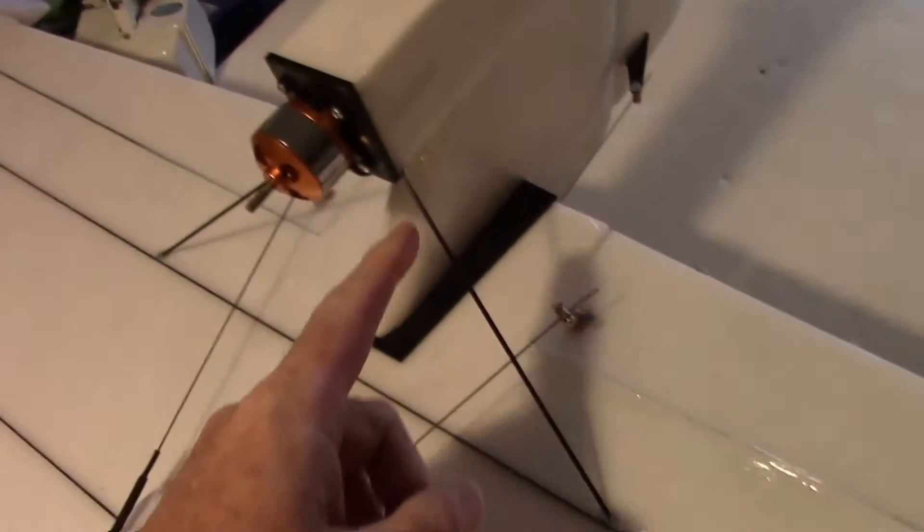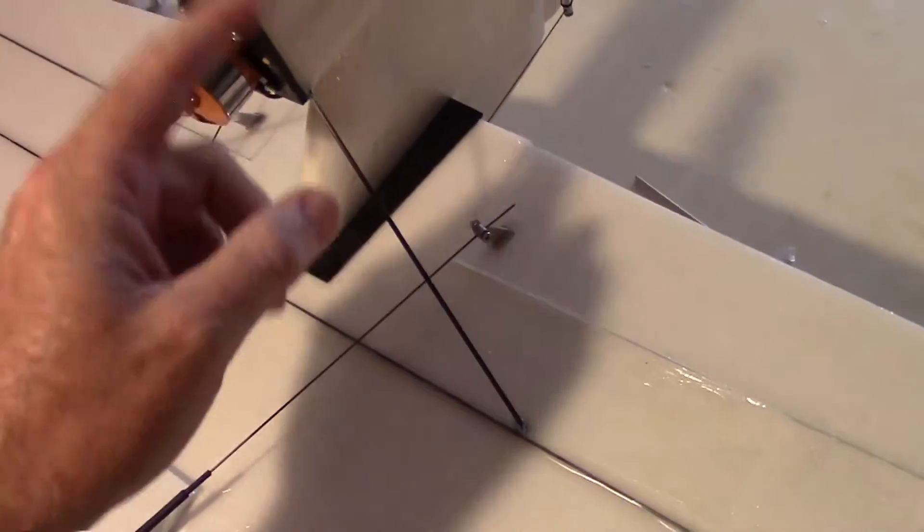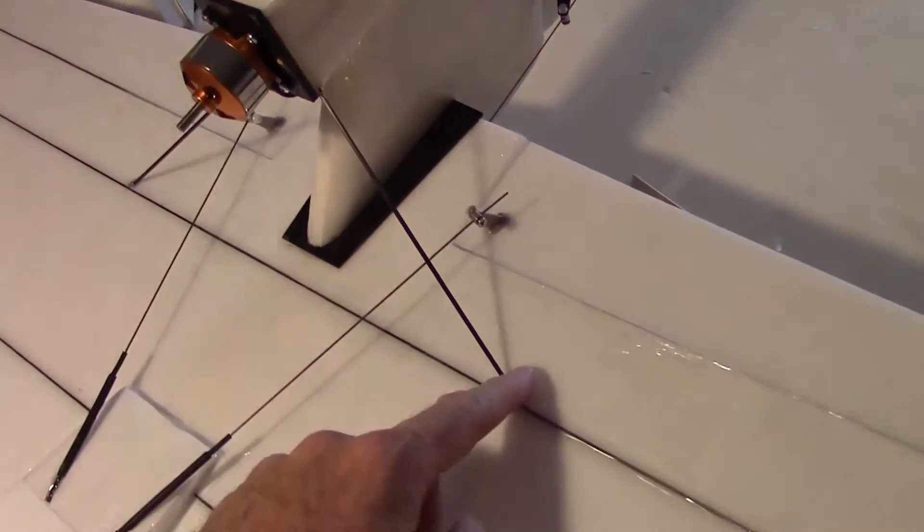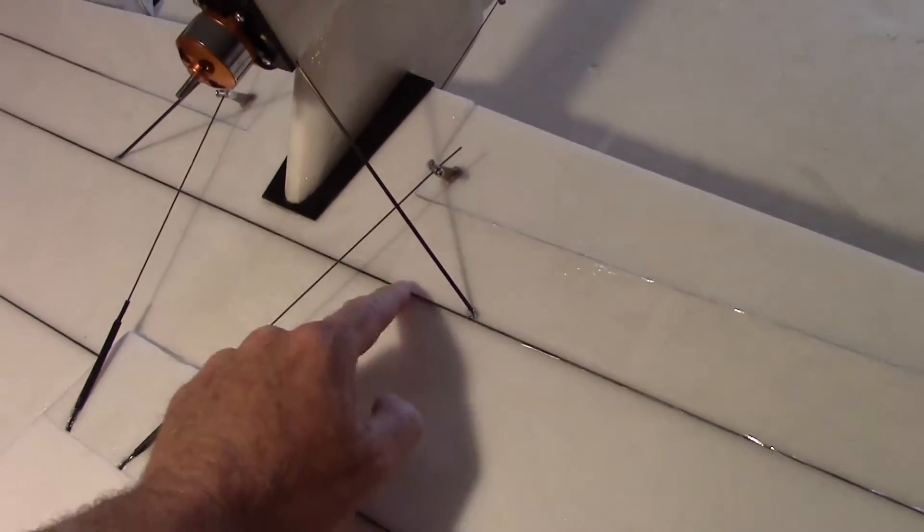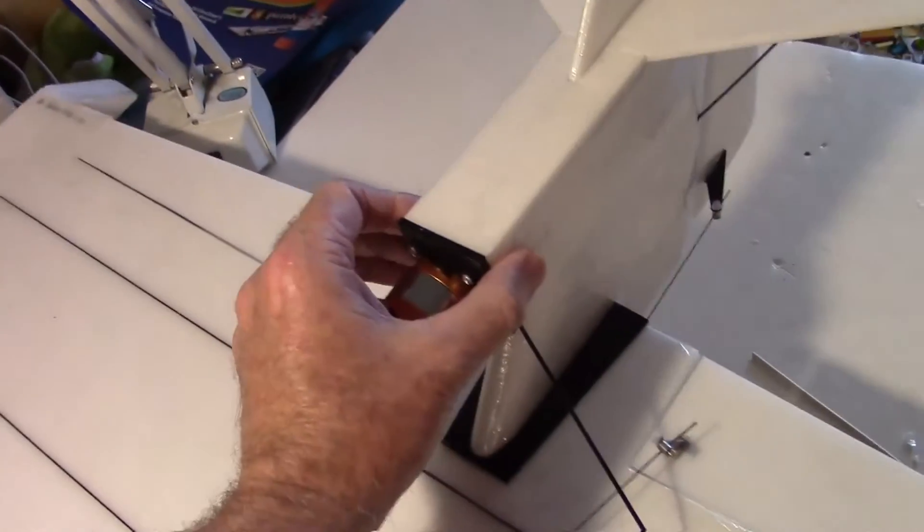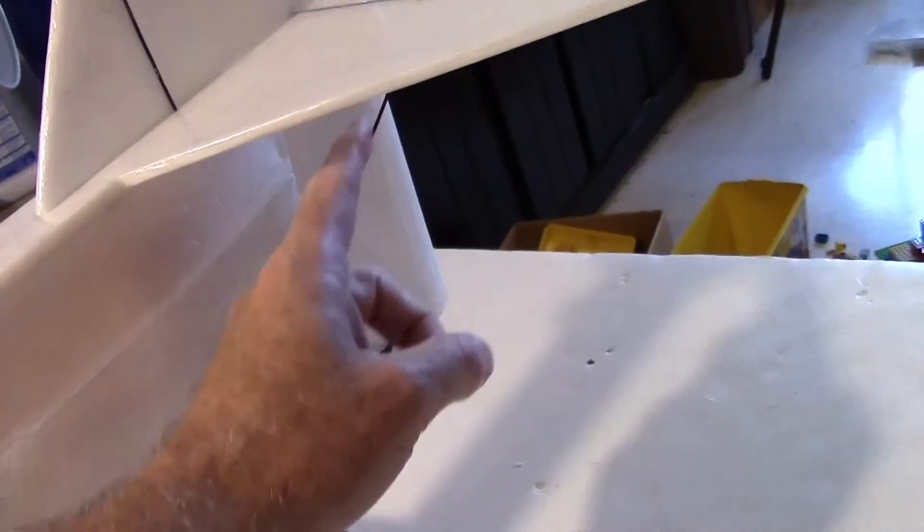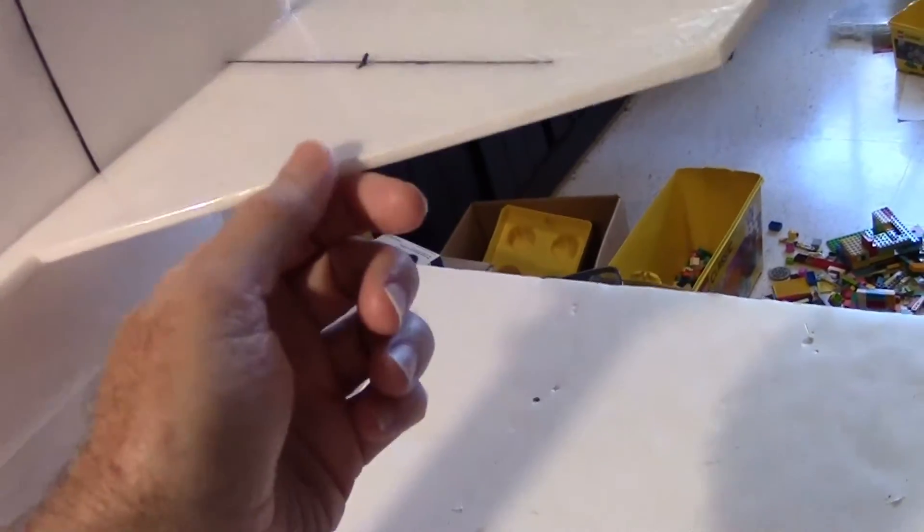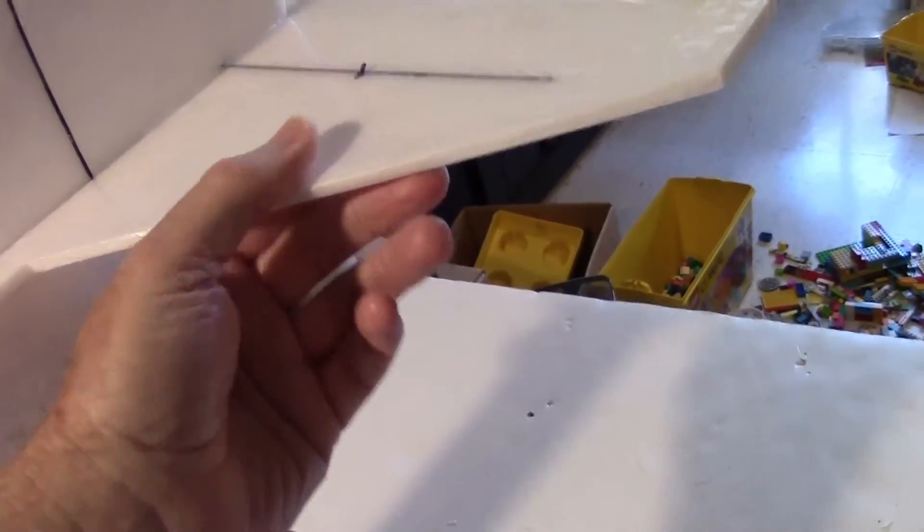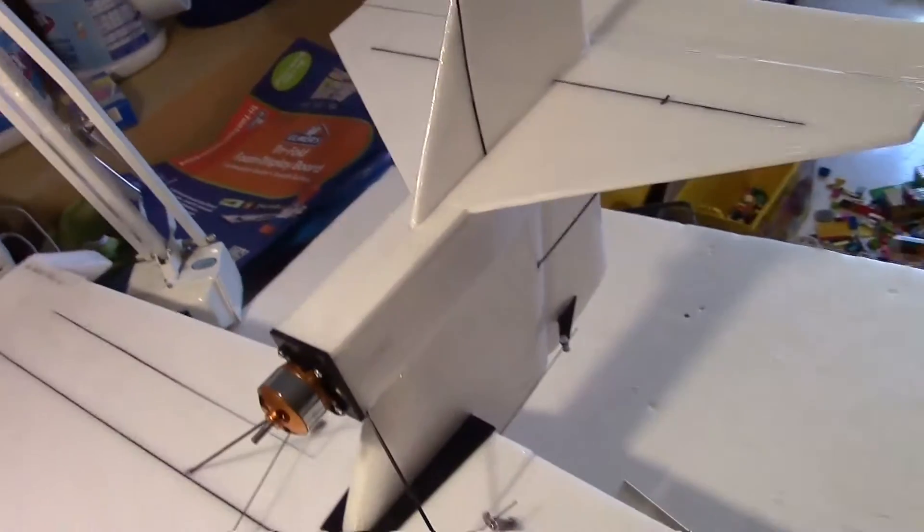I also added some bracing here to come down from the nacelle down to where the spar is in the main wing right here, just to keep that nacelle a little bit steadier. And I also added some bracing right here. Carbon fiber rods right here to the vertical stabilizer, so that won't flutter at all. So I've got that done.